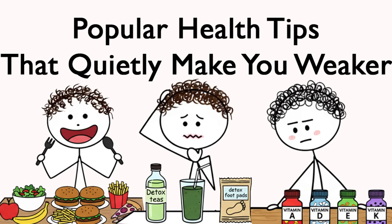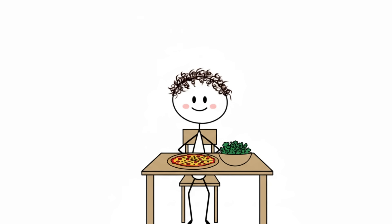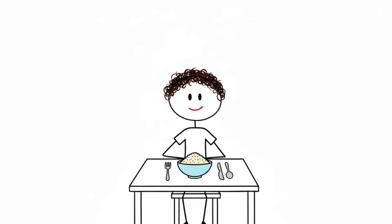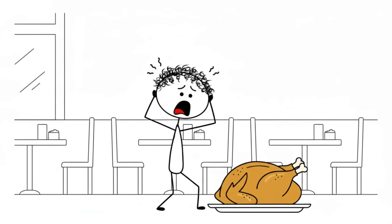Popular Health Tips That Quietly Make You Weaker. 12. Only Eat Clean Foods. Ah, clean eating. The phrase that makes kale feel morally superior to pizza. It sounds noble, like you're detoxing your soul through quinoa, but in reality, it often leads to orthorexia, a sneaky eating disorder where you obsess over being perfectly healthy. You start fearing normal food like it's radioactive, and suddenly your social life dies because the restaurant's chicken wasn't grass-fed by monks.